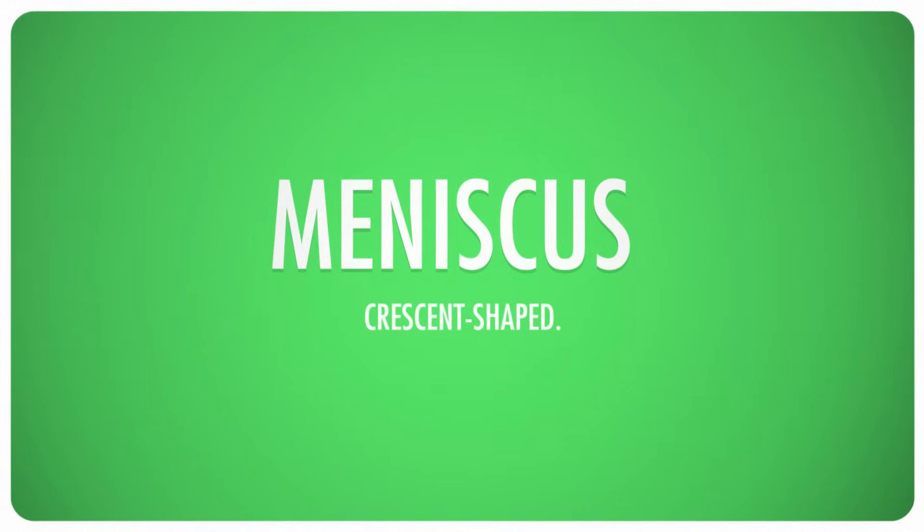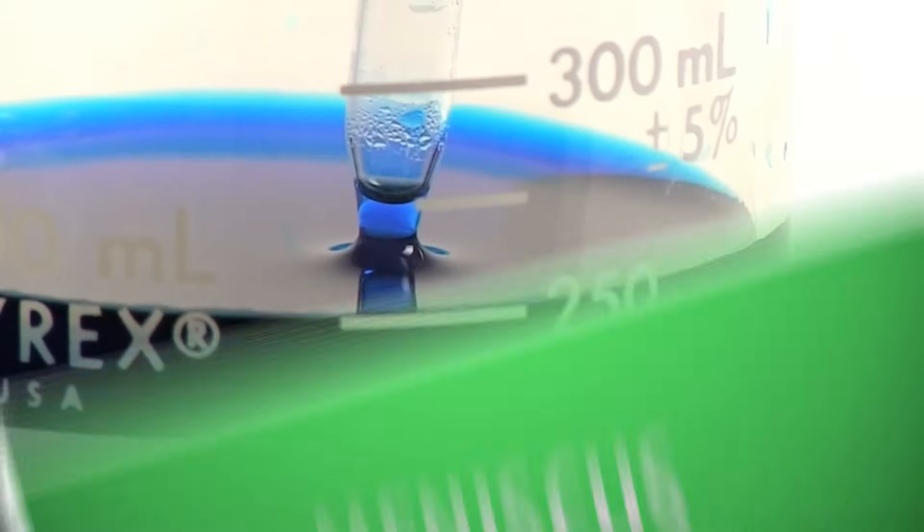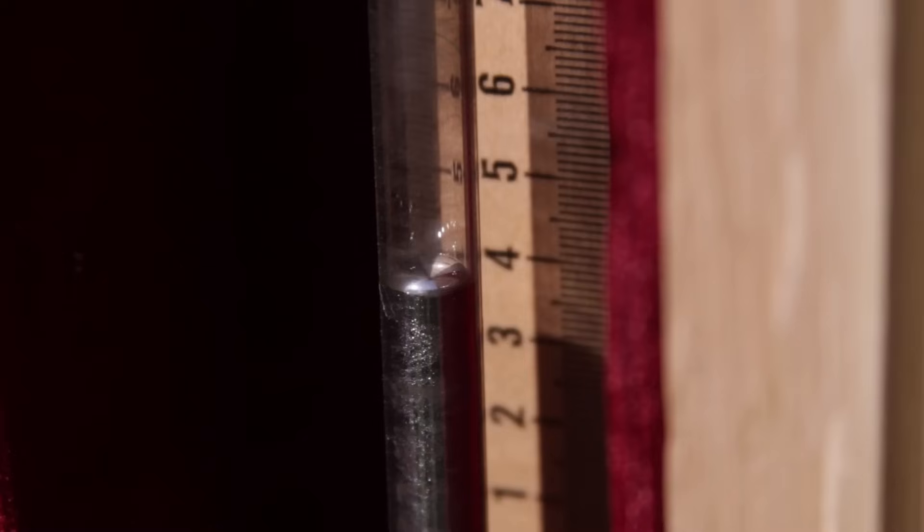If the molecules in the liquid are more attracted to the container than to each other, they will form a concave meniscus, or crescent-shaped curve at the surface, as we see here with water and glass. And if the molecules in the liquid are more attracted to each other than to the container, as is the case with mercury and glass, they'll form a convex meniscus.